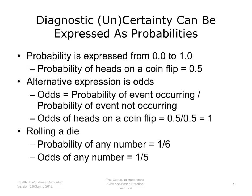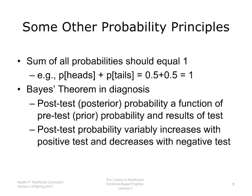An alternative expression of probabilities is to talk about the odds. The odds are the probability of an event occurring versus the probability of an event not occurring, or the ratio. The odds of getting heads on a coin flip is 1 to 1. When we roll a single die with six possibilities, the probability of getting any number is 1/6. The odds of getting any one number are 1 to 5. Another principle is that the sum of all probabilities should equal 1. With a coin flip, the probability of heads or tails is each 0.5, which adds up to 1.